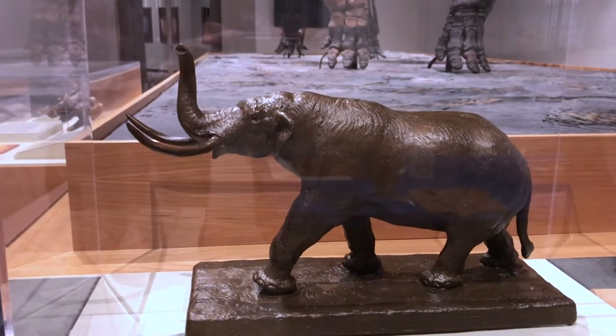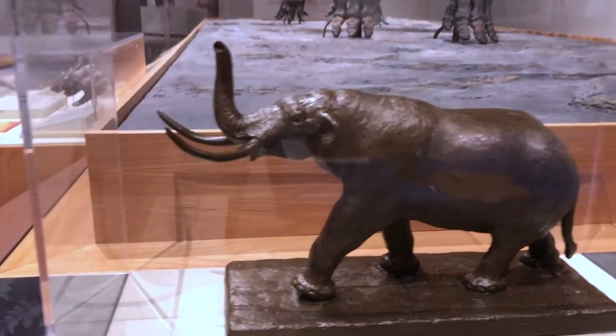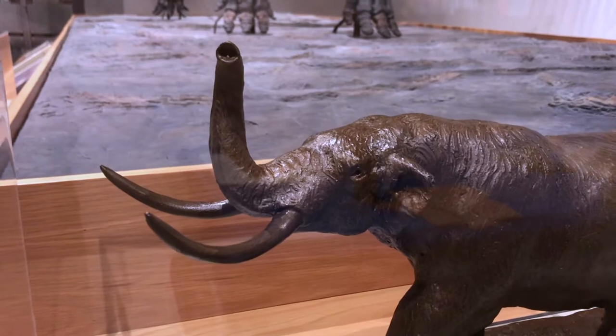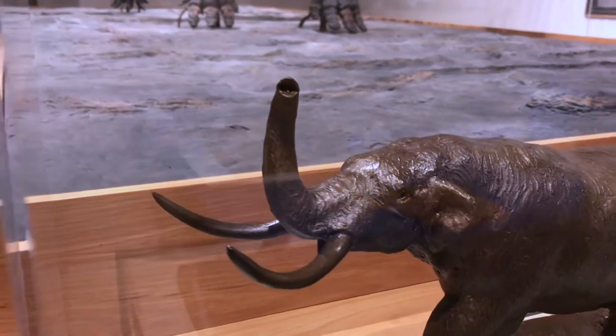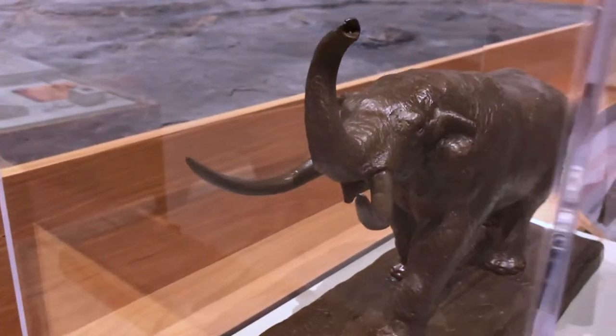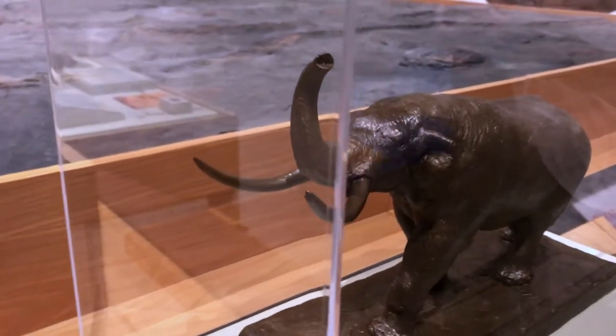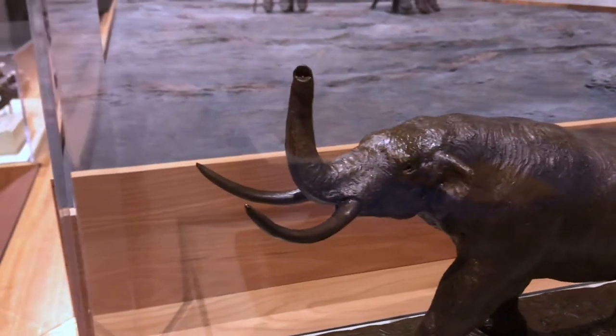This is a mastodon model, and you can see that it's got a very flat head. That's the main easily distinguishable difference between the two animals. And you can also see that the tusks are fairly short, wide, and straight.